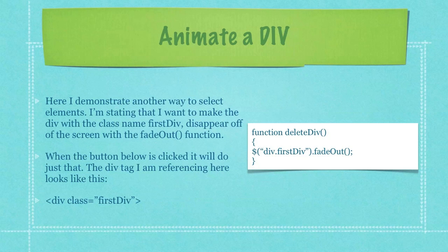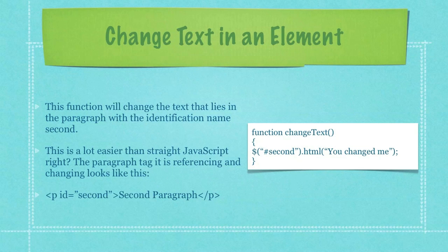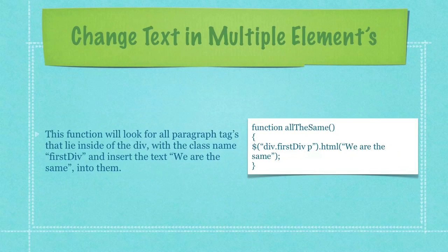This function will change the text that lies in the paragraph with the identification name 'second'. This is a lot easier than straight JavaScript. The paragraph tag it is referencing and changing looks like the third bolded item you can see here in the lower left-hand side of your screen. This function will look for all paragraph tags that lie inside of the div with the class name 'first div' and insert the text 'we are the same' into those.